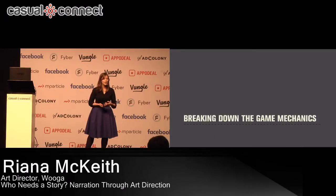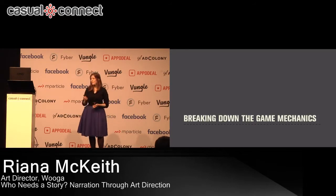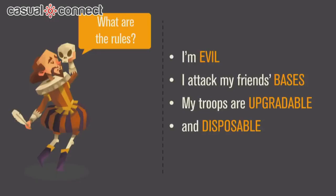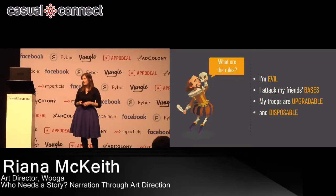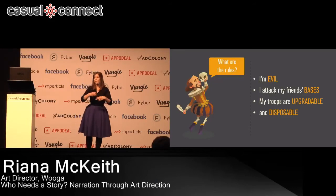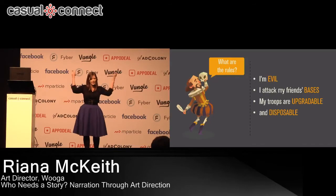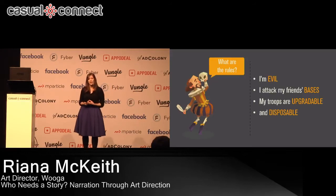At Wooga, it's a very collaborative process — a game designer will come to me with a prototype and I'll play it. I like to break it down into rules that the artwork needs to support. Here's an example from a game I worked on: it was a base-building game where you were going to be evil. Your troops were infinitely upgradable with multiple upgrade tracks, but they were going to be disposable — you could explode them all at once with one touch. So you couldn't feel too much about them, and they couldn't be too cute.